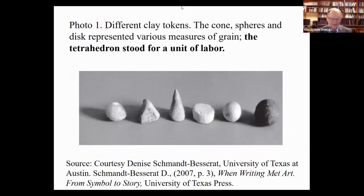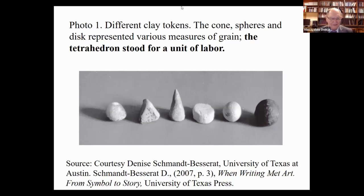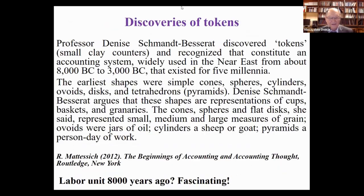This token — the second from the left — the tetrahedron, stood for a unit of labor. This picture was captured by Professor Denise Schmandt-Besserat at the University of Texas in Austin. She discovered tokens — small clay counters — and recognized that they created an accounting system widely used in the Near East from 8,000 BCE to 3,000 BCE, spanning five millennia.